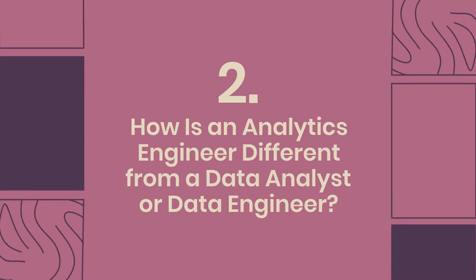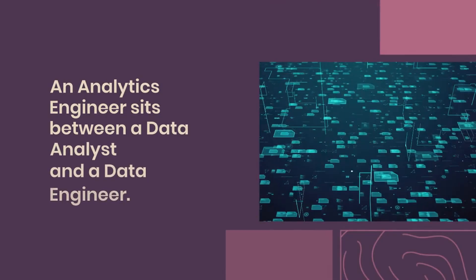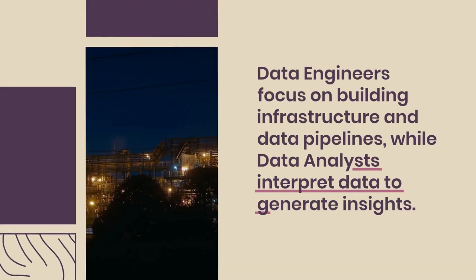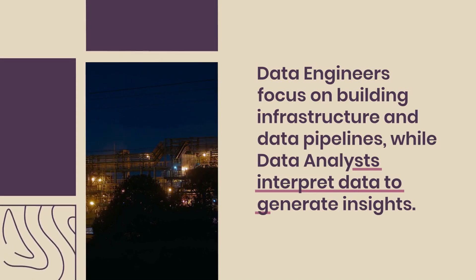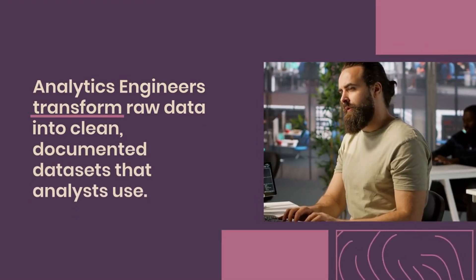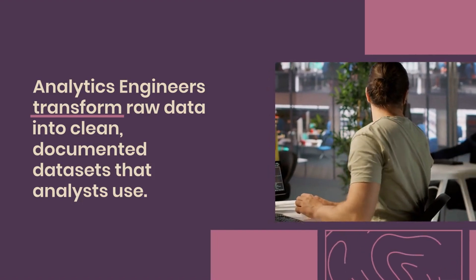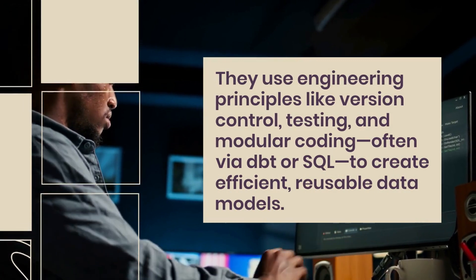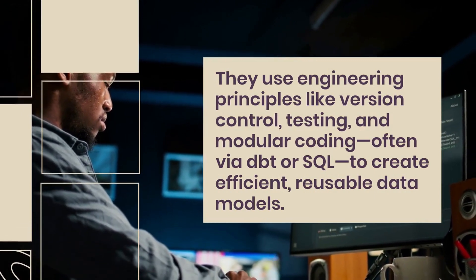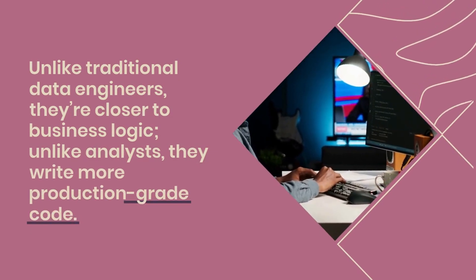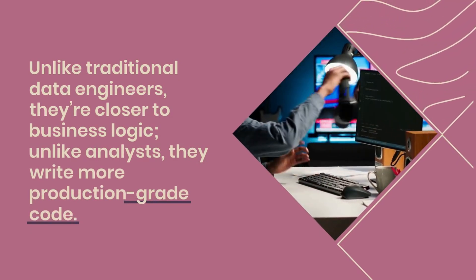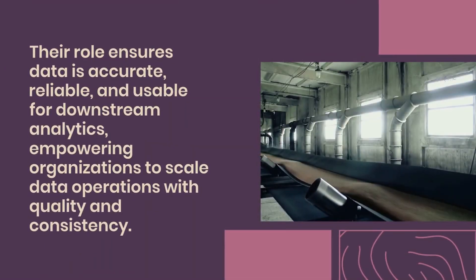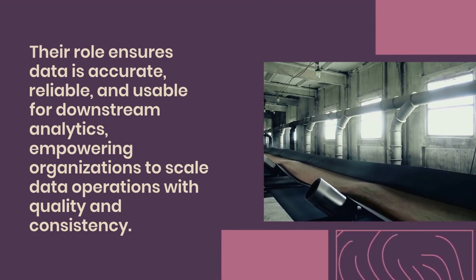Question 2: How is an analytics engineer different from a data analyst or data engineer? An analytics engineer sits between a data analyst and a data engineer. Data engineers focus on building infrastructure and data pipelines, while data analysts interpret data to generate insights. Analytics engineers transform raw data into clean, documented datasets that analysts use. They use engineering principles like version control, testing, and modular coding, often via DBT or SQL, to create efficient, reusable data models. Unlike traditional data engineers, they're closer to business logic. Unlike analysts, they write more production-grade code. Their role ensures data is accurate, reliable, and usable for downstream analytics, empowering organizations to scale data operations with quality and consistency.